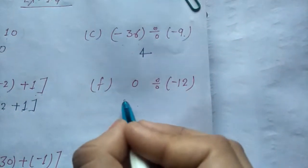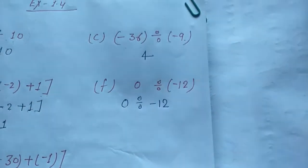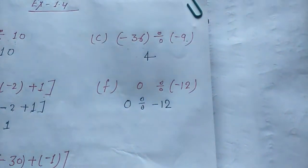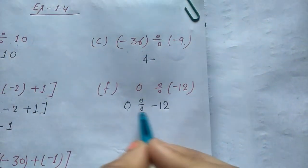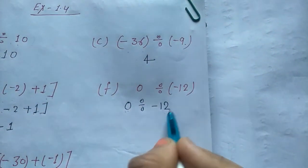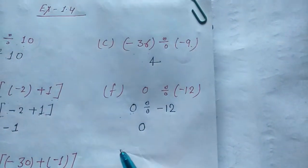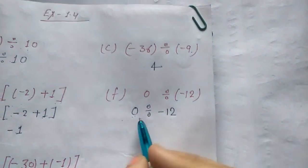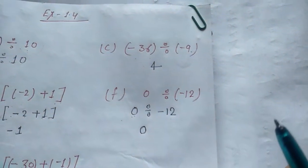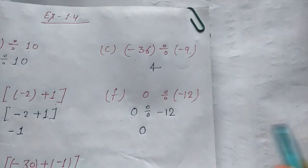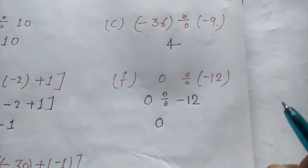Part F: 0 divided by minus 12. Yeh bhi property ka part hai — ki 0 ko agar hum kisi number se divide karte hain, toh answer 0 hota hai. Uska opposite, agar hum number ko 0 se divide karenge, toh hamaara answer infinity aayega — meaningless, not defined.